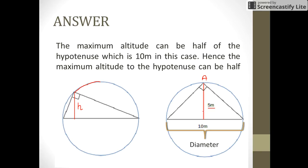So the maximum length of the altitude can only be equal to half of the length of the hypotenuse. So in this case, the length of the altitude given to us is 6 meters, which is not possible.